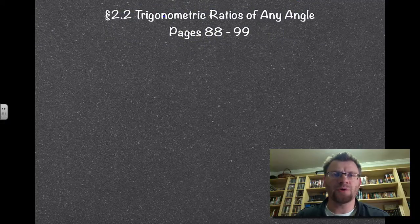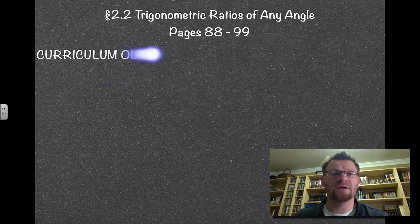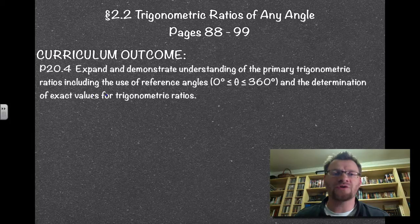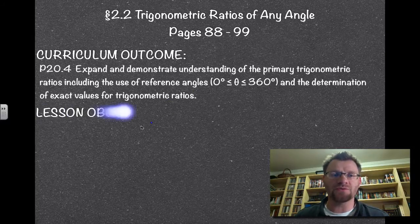Today's topic is 2.2 Trigonometric Ratios of Any Angle, found on pages 88 to 99 in your text. Our curriculum outcome is 20.4, to expand and demonstrate understanding of the primary trigonometric ratios, including the use of reference angles from 0 to 360 degrees, and the determination of exact values for trigonometric ratios.